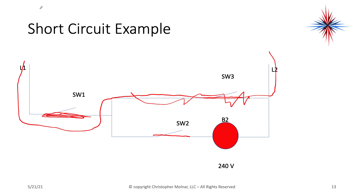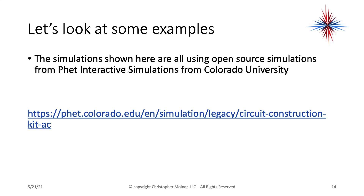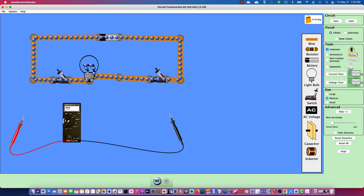Now we're going to look at a couple of circuit examples using simulations. These are open-source simulations from the University of Colorado at phet.colorado.edu. The AC-DC circuit construction kit is part of the legacy group of simulations. I have the AC simulator open and I'm using DC because AC looks too confusing on screen — the same principles apply.